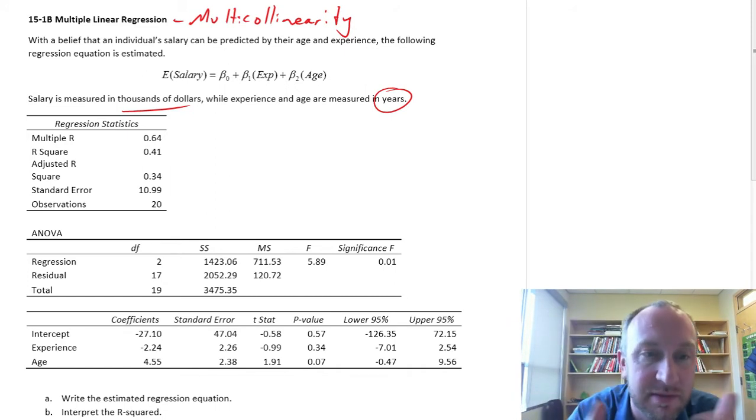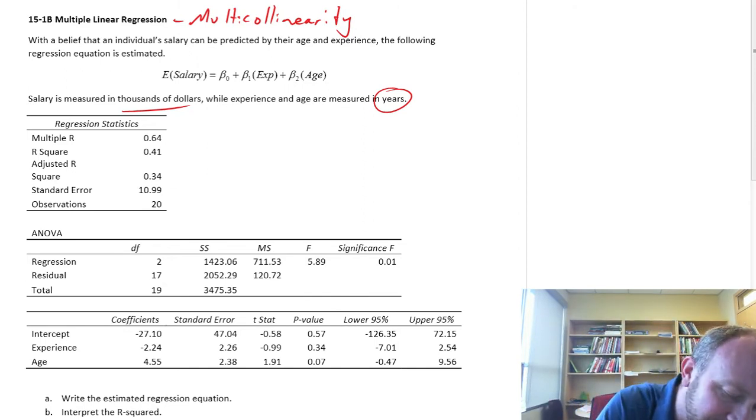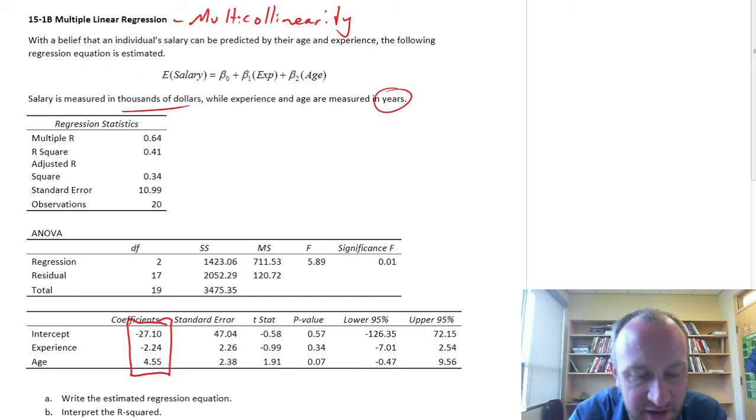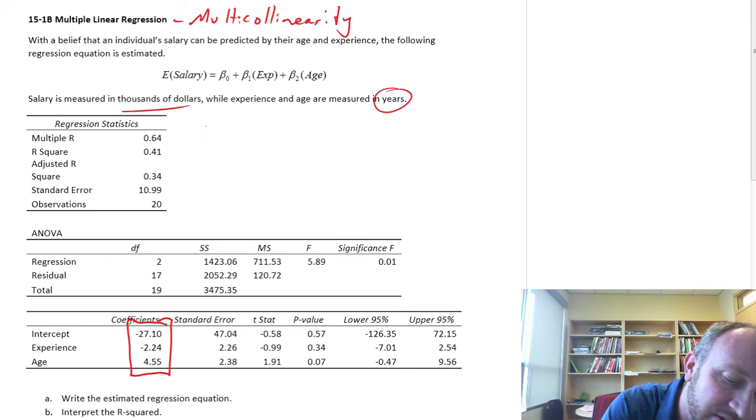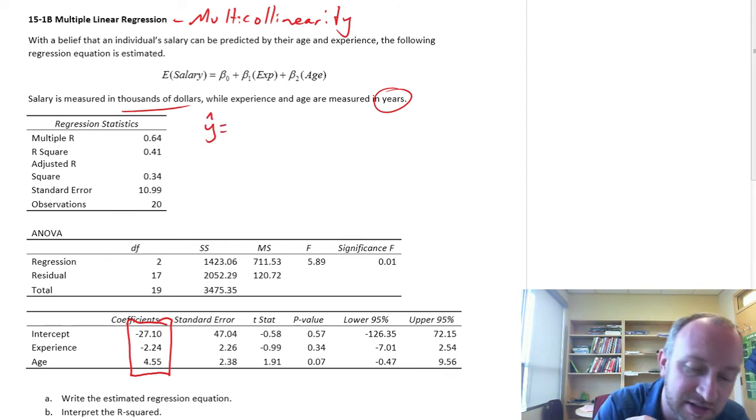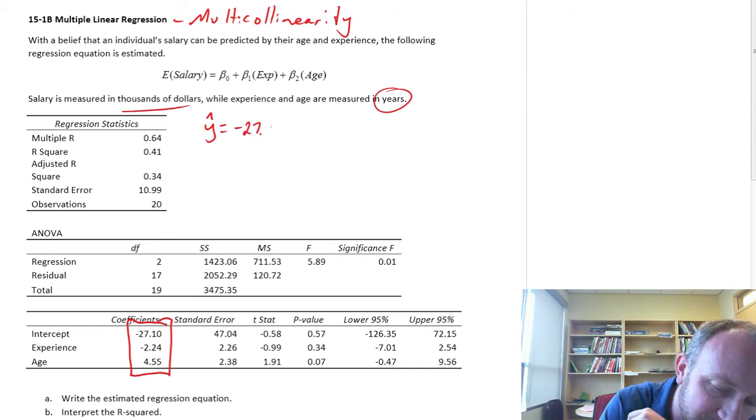So we'll talk a little bit more about that as we go through. Let's get into the requirements of this problem. So part A, write the estimated regression equation. This is hopefully relatively straightforward. I have all of our necessary coefficients are right here. So our expected salary, or our estimate of the average salary, can be determined by this equation.